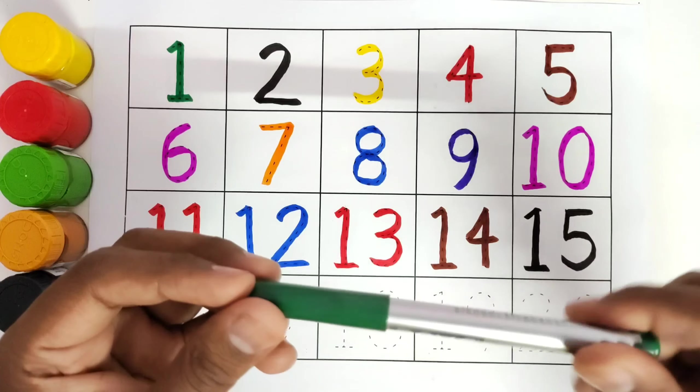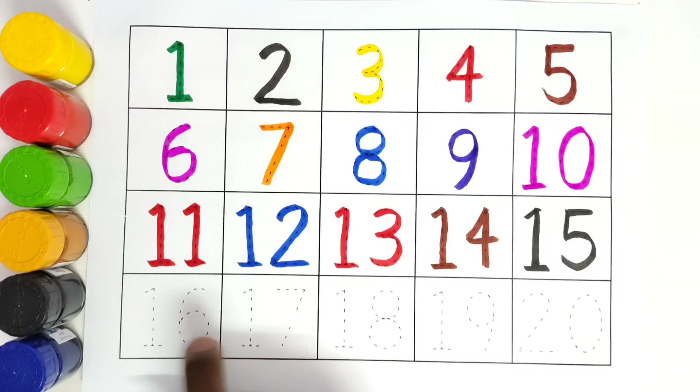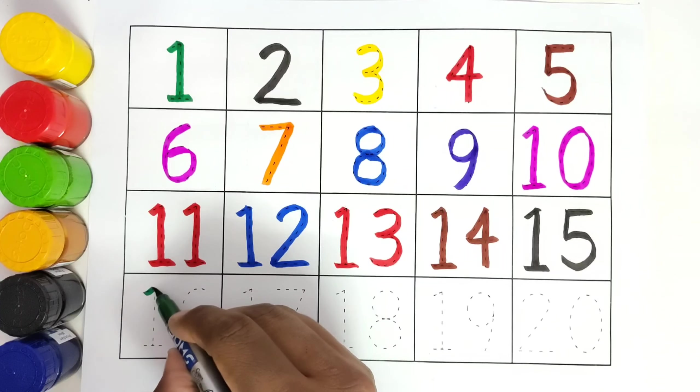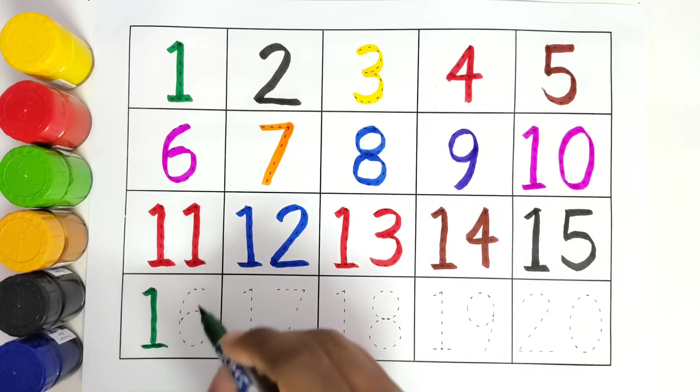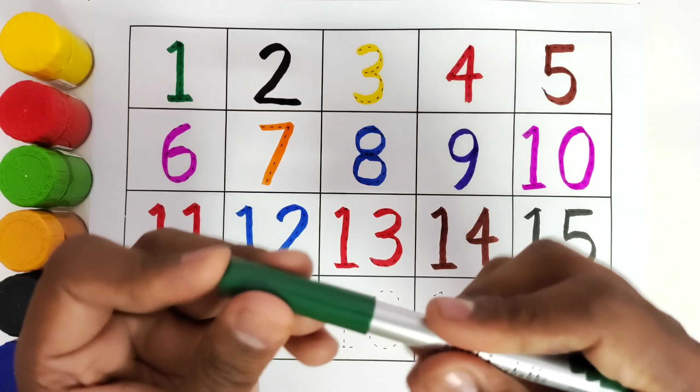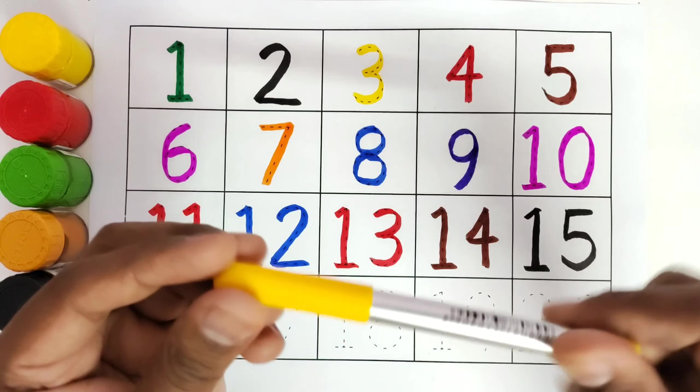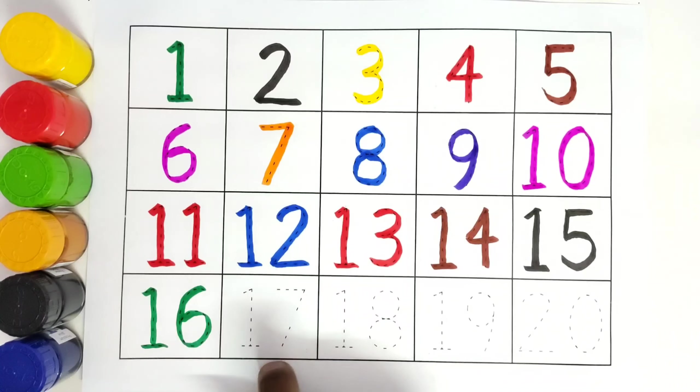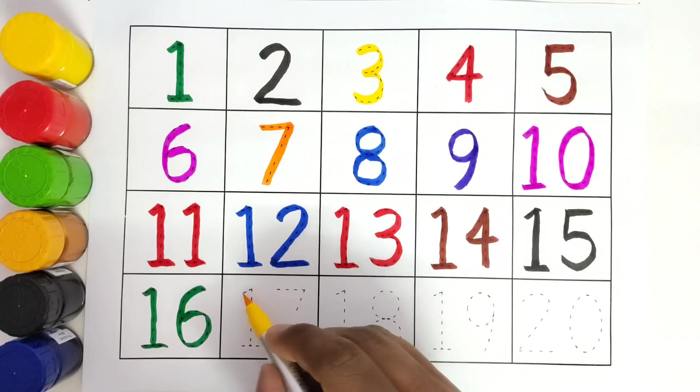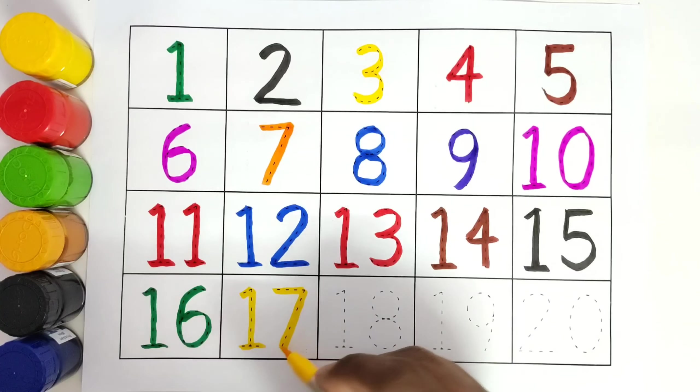This is green color, number 16. 1, 6, 16. This is yellow, number 17. 1, 7, 17.